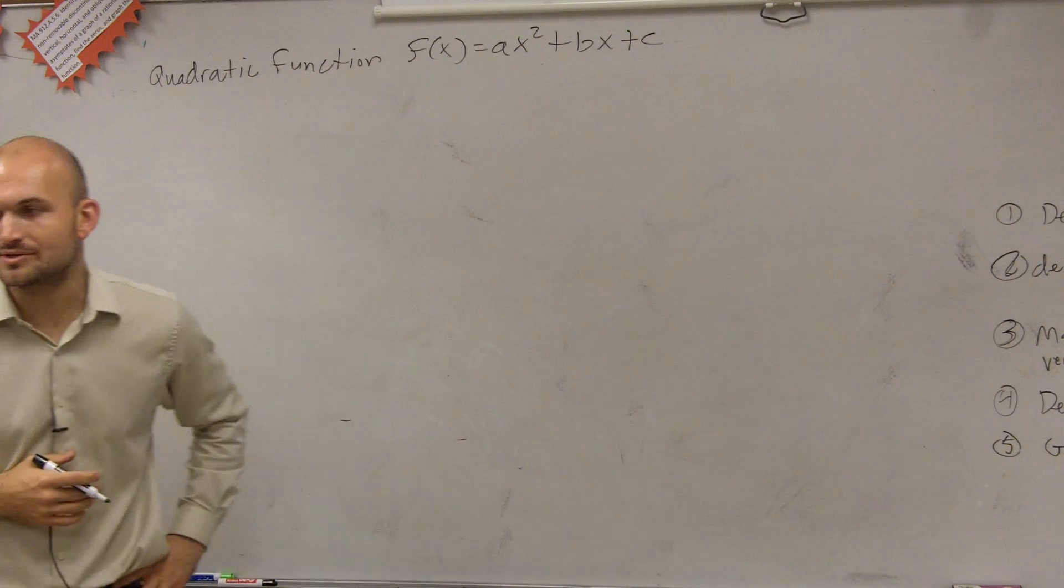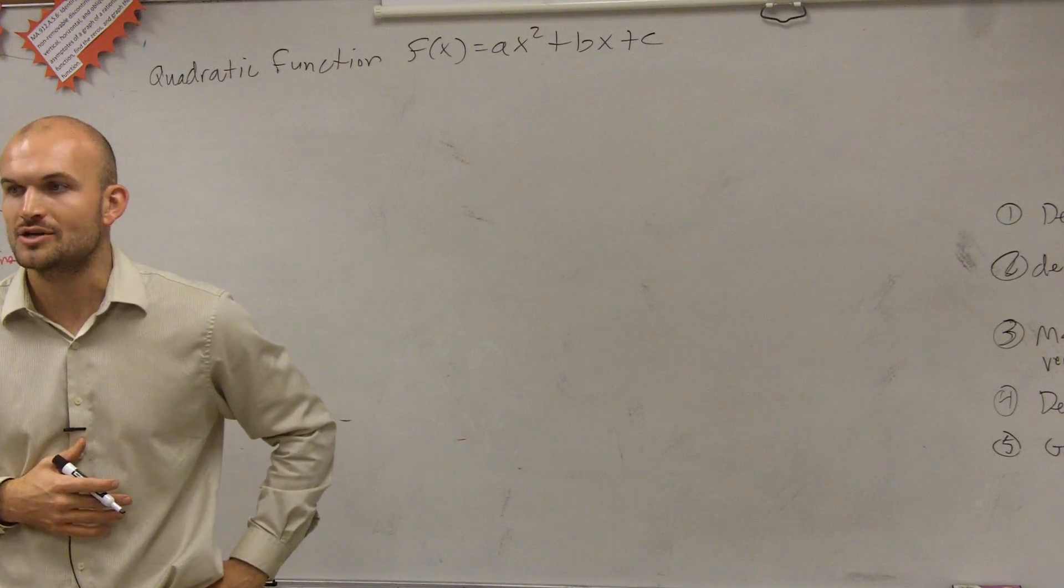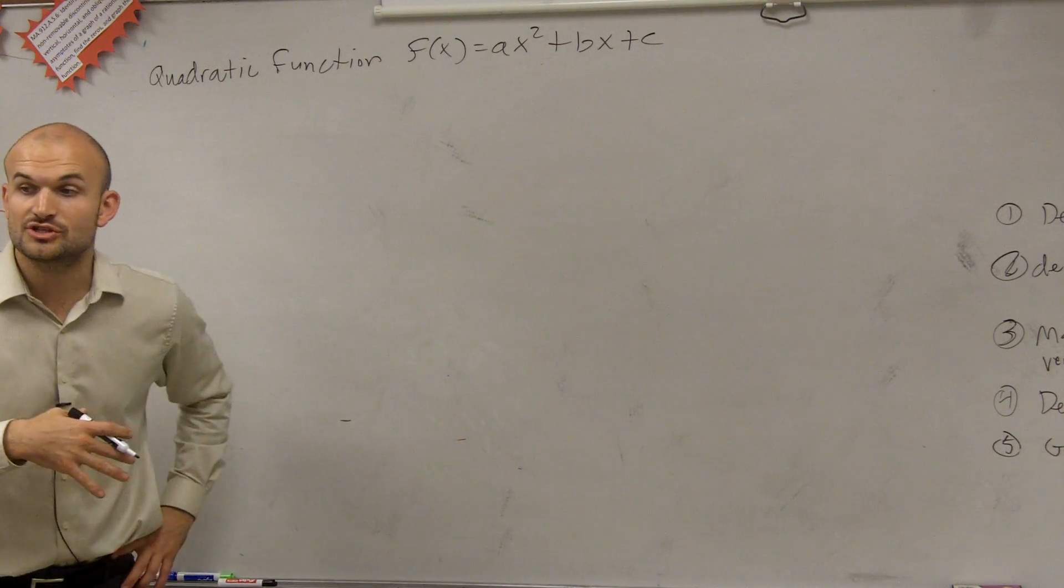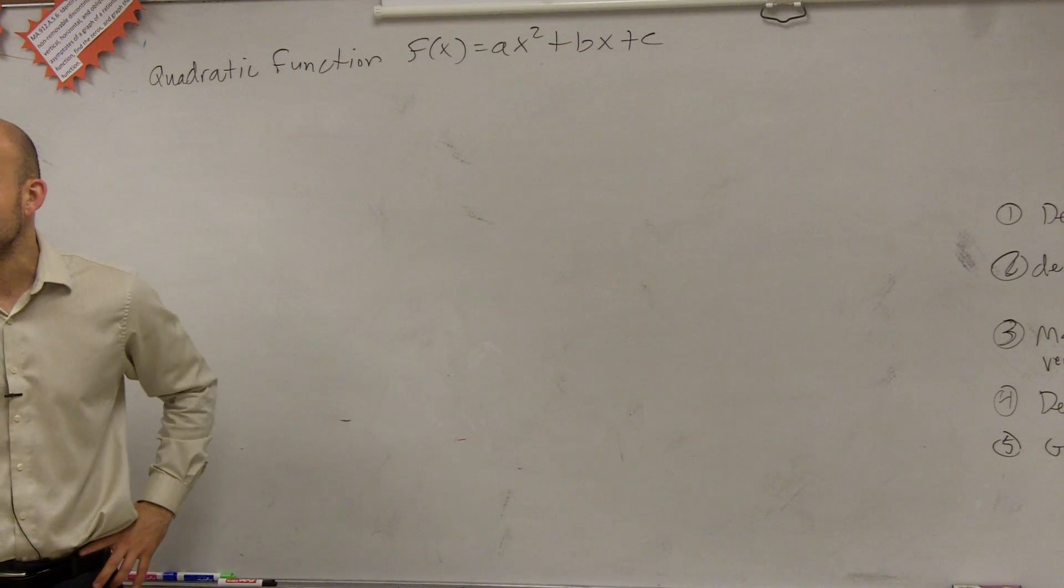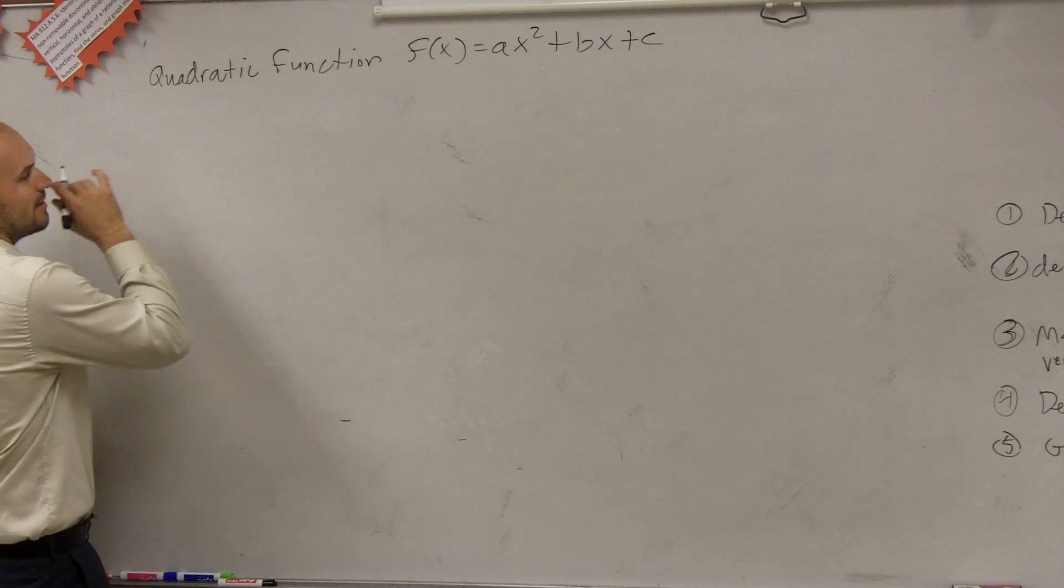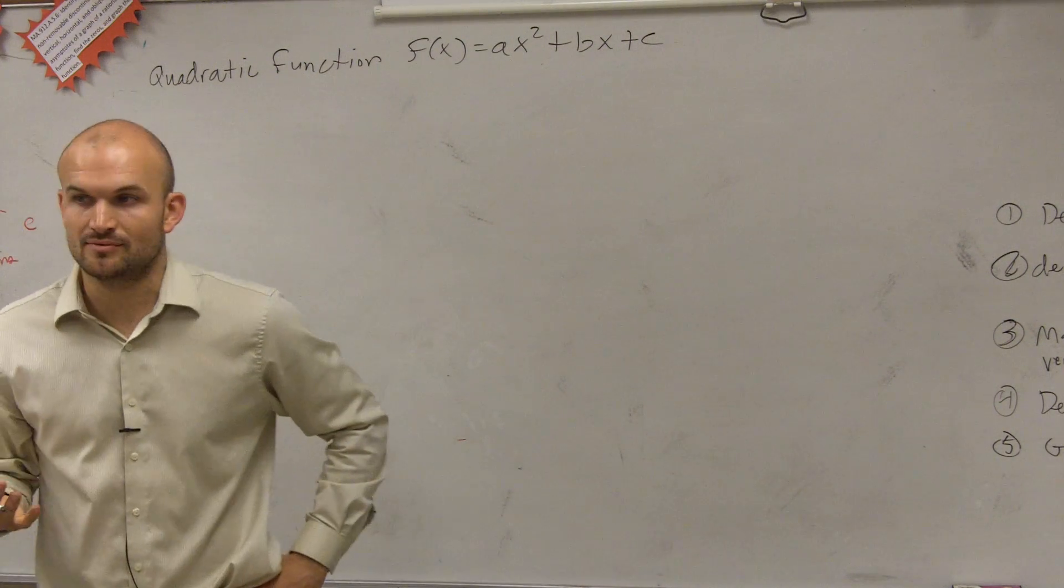So ladies and gentlemen, what we're going to do is we're going to talk about two different parts of our quadratic. Now, we talked about the shape of the quadratic is a parabola, which we called our u-shaped graph. And then we talked about the maximum and the minimum value.